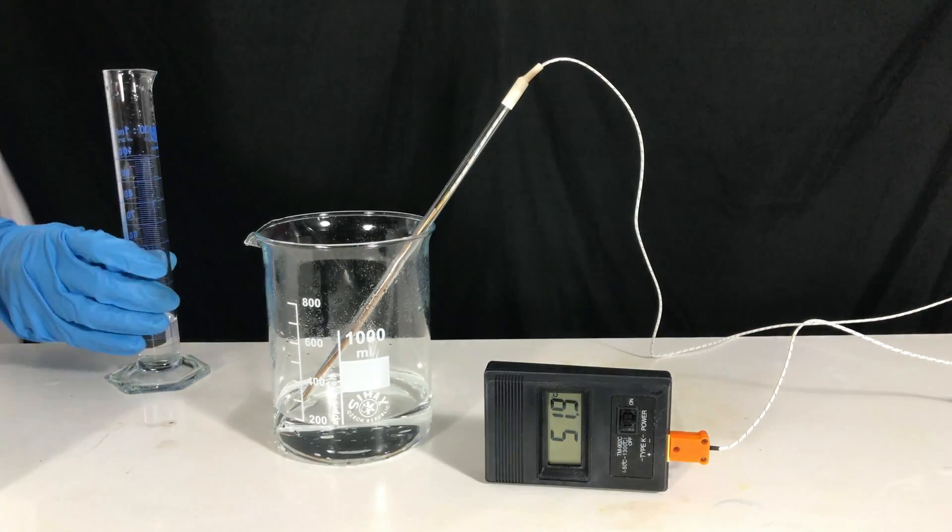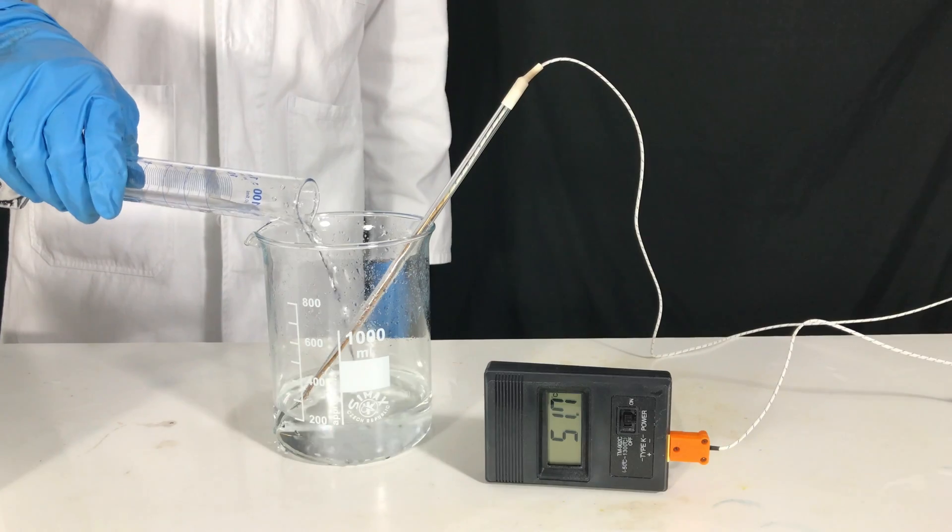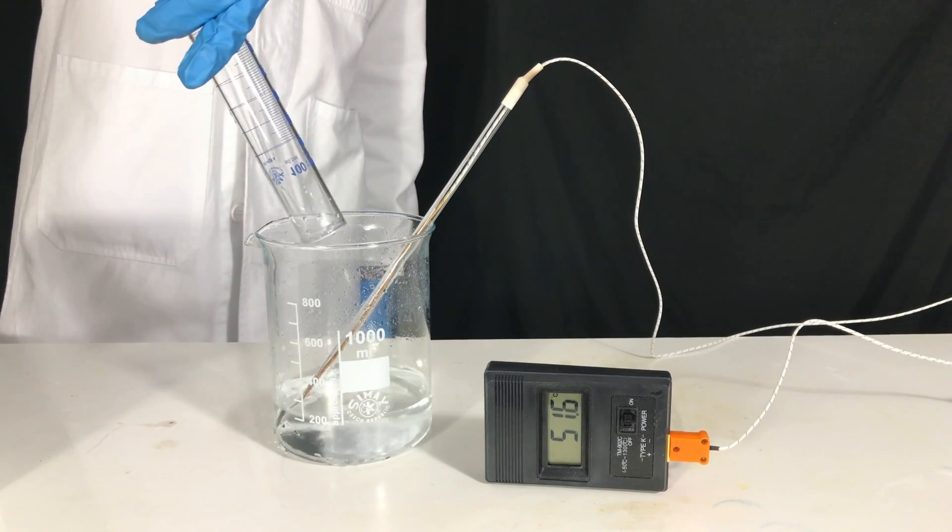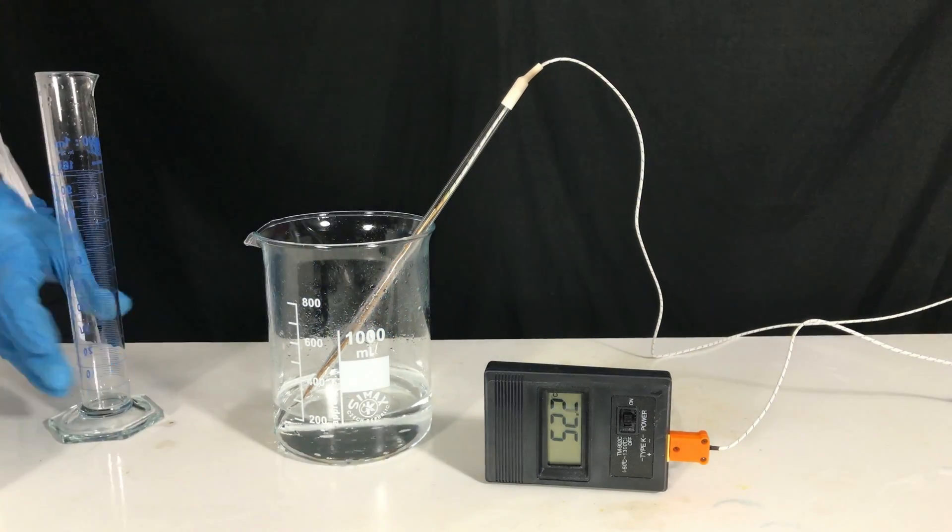The last 20 ml of now 40% formic acid were just straight away dumped in. At this point, not much heat will be generated anymore.